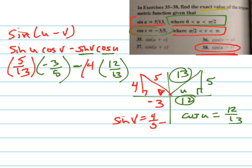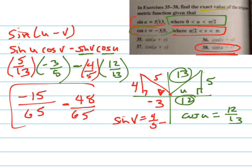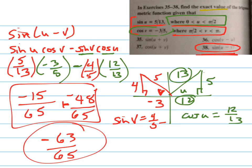And now I just simplify it all. So this right here is going to be negative 15 over 65. And this is going to be negative 48 over 65. And I could add them together. So this is plus a negative 48. So that's negative 63 over 65. And there's your exact value of it without having to use a calculator or anything like that.